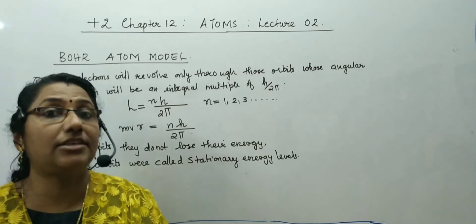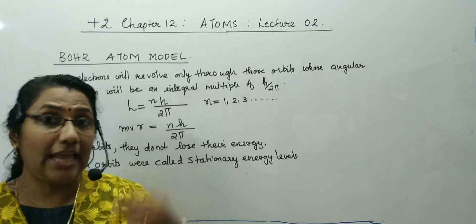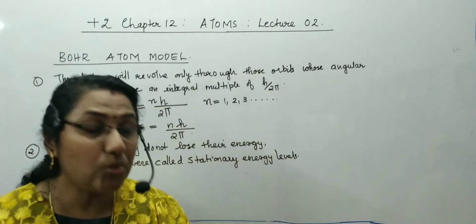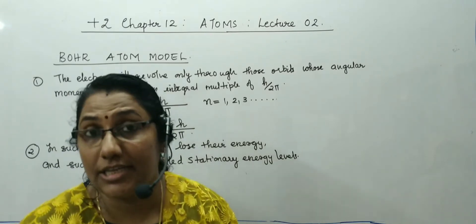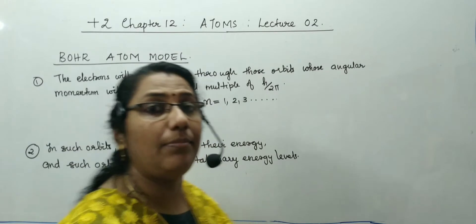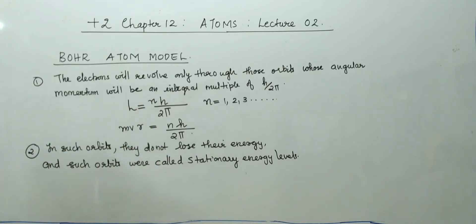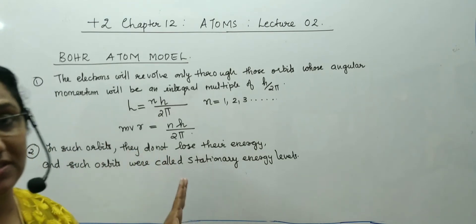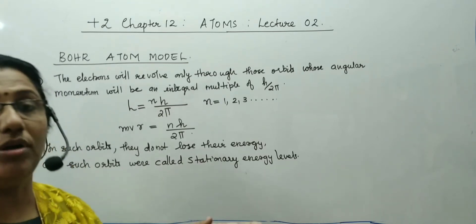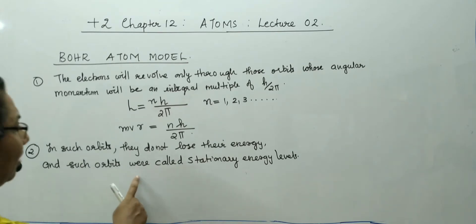Hence the first drawback of Rutherford's atom model is overcome. According to Rutherford's atom model, the electrons revolving around the nucleus, since they are accelerated charged particles, as suggested by Maxwell's electromagnetic theory, they lose their energy during each revolution. The radius of the circular path decreases and finally the electron falls inside the nucleus. But it does not happen because the electrons will never lose their energy in orbits whose angular momentum is an integral multiple of h by 2π. Such orbits never lose their energy, that is why electrons will not fall into the nucleus. The atom remains stable for a long period.